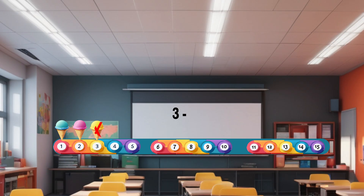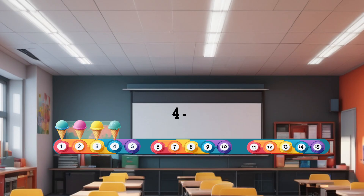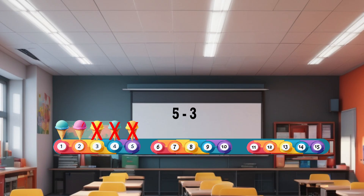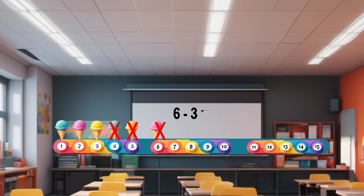Three minus three equals zero. Four minus three equals one. Five minus three equals two.